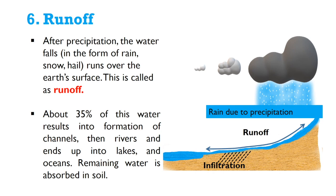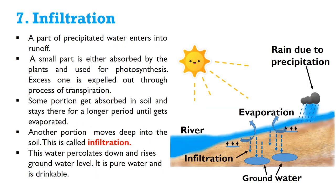After precipitation, the water that falls in the form of rain, snow, or hail runs over the Earth's surface — this is called runoff. About 35% of this water results in the formation of channels, then rivers, and ends up in lakes and oceans. The remaining water is absorbed into the soil.